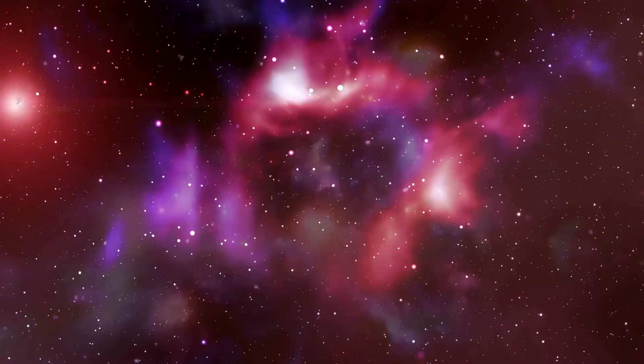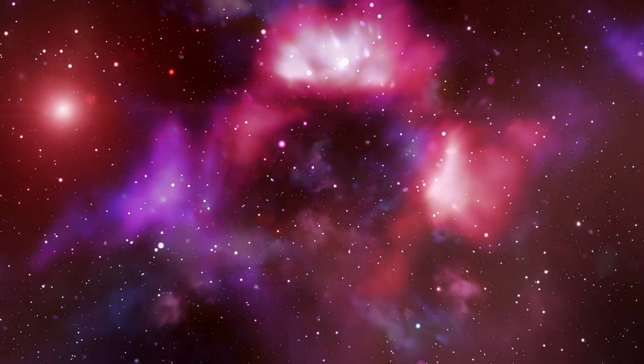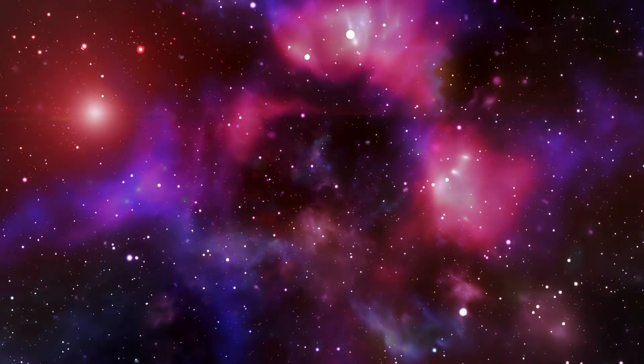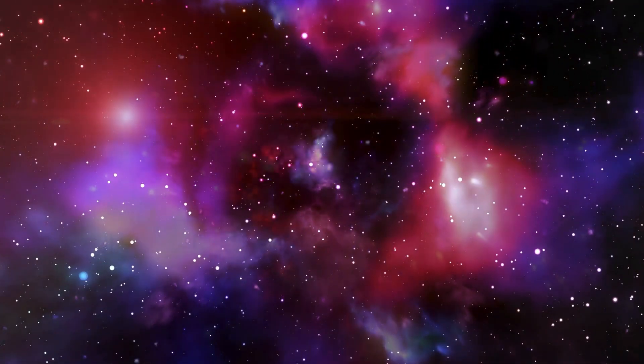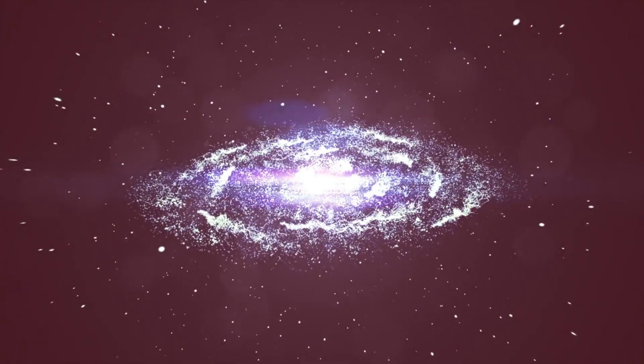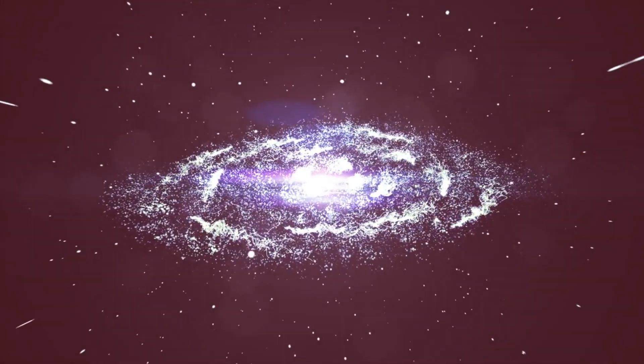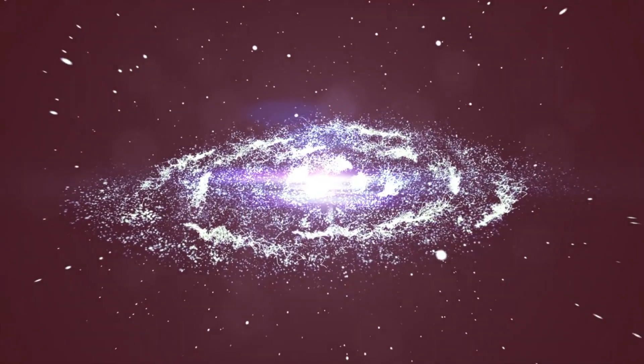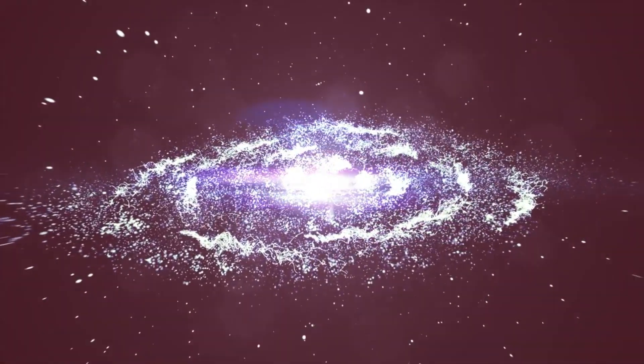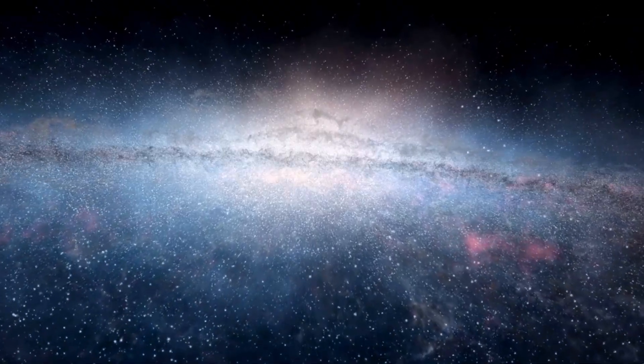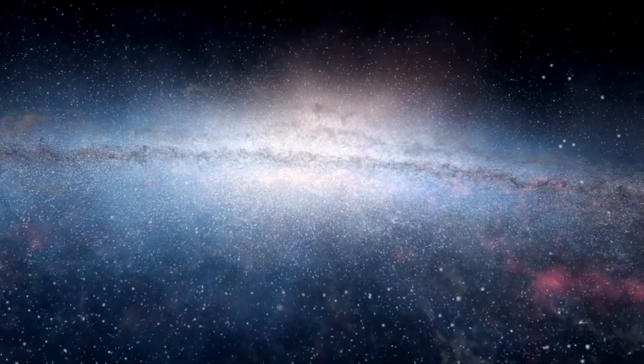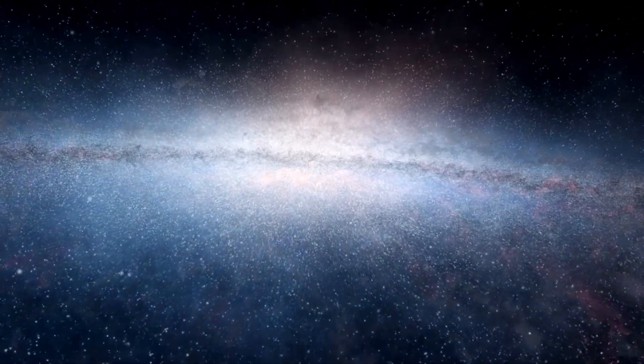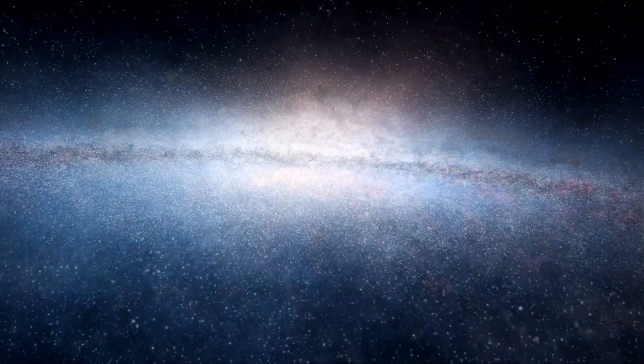Betelgeuse's erratic behavior has sparked discussions about the potential for an imminent supernova explosion. In a supernova, as the star burns through its remaining fuel, its core collapses, leading to the formation of a black hole, while its outer layers are ejected at speeds of up to 25,000 kilometers per second. If Betelgeuse were to undergo a supernova, it would be a spectacular event visible for weeks, much like the full moon.